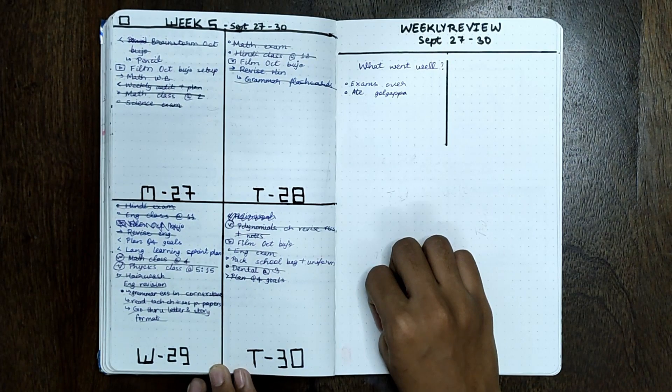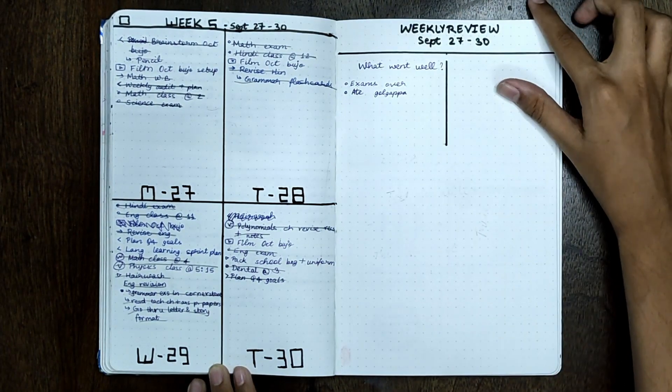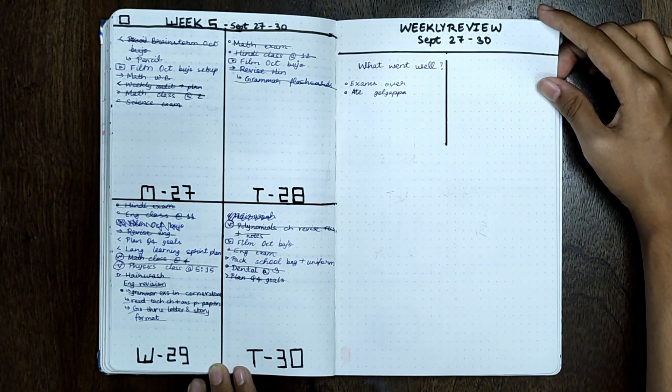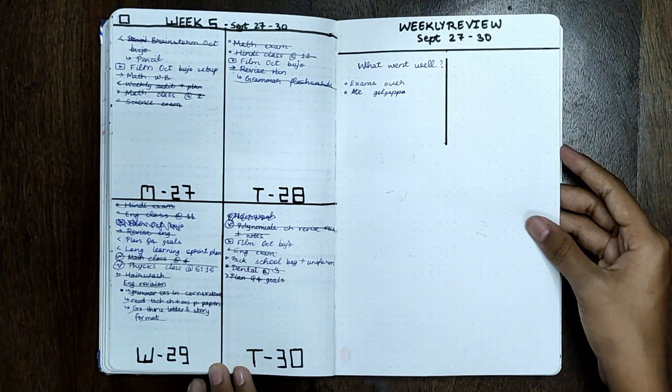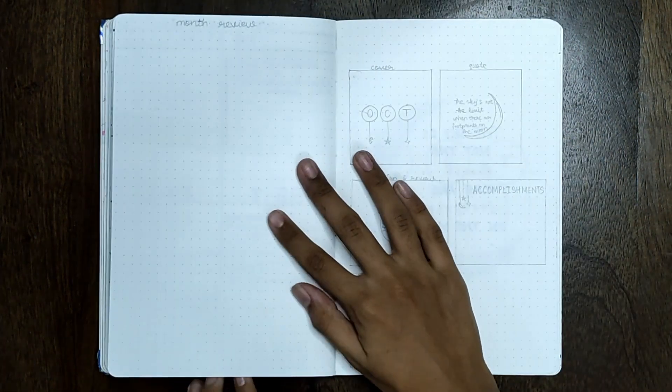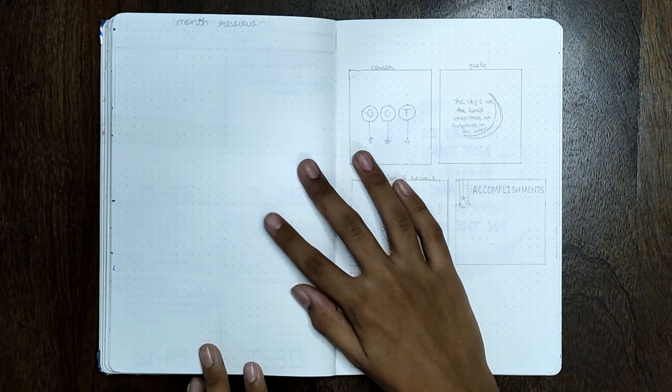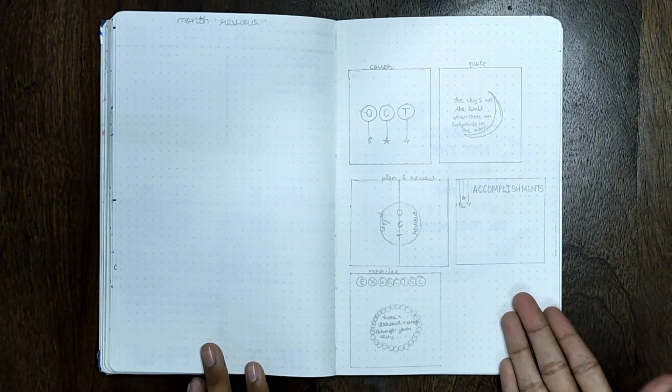I'm actually happy about the habit of reviewing my week because it just makes me feel much more excited for the new week. And this was for the last four days of September. At the end, I've left a page for the monthly review of September, and on the right I just planned the October spread.